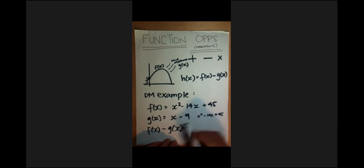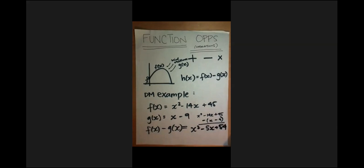And then I'm going to put the like terms underneath each other: x minus 9. And then we're going to subtract both of these. So x squared stays there. Negative 14x minus x is negative 15x. And 45 minus negative 9 is really 45 plus 9, which is 54. That should be our final answer.